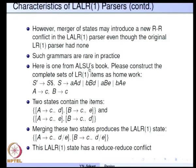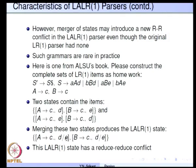An example from the dragon book: when constructing LR1 sets of items for a grammar, we may get two states — one containing A to C dot comma d and B to C dot comma e, and another containing A to C dot comma e and B to C dot comma d. These have the same kernel, so when merged we get A to C dot comma d slash e and B to C dot comma d slash e — a reduce-reduce conflict introduced by LALR1 merging that was not present in the original LR1 parser.